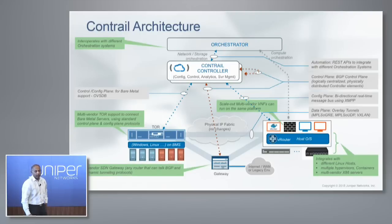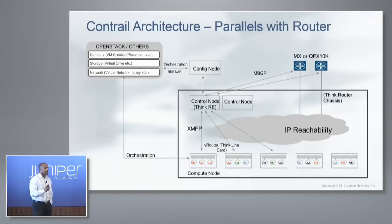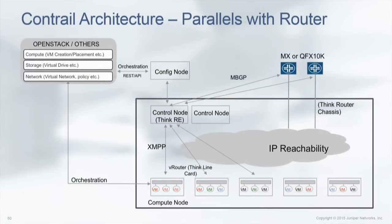One helpful way to understand the architecture is to compare it to a router. The control nodes are like the routing engine of a router — they talk east-west using BGP. The compute nodes can be thought of as line cards. The QFX 5100 can also be thought of as another line card in this framework, making the whole thing like a giant router chassis. Config nodes are analogous to the CLI or other configuration methods in a router. You can have orchestration systems plugging into that layer as well.